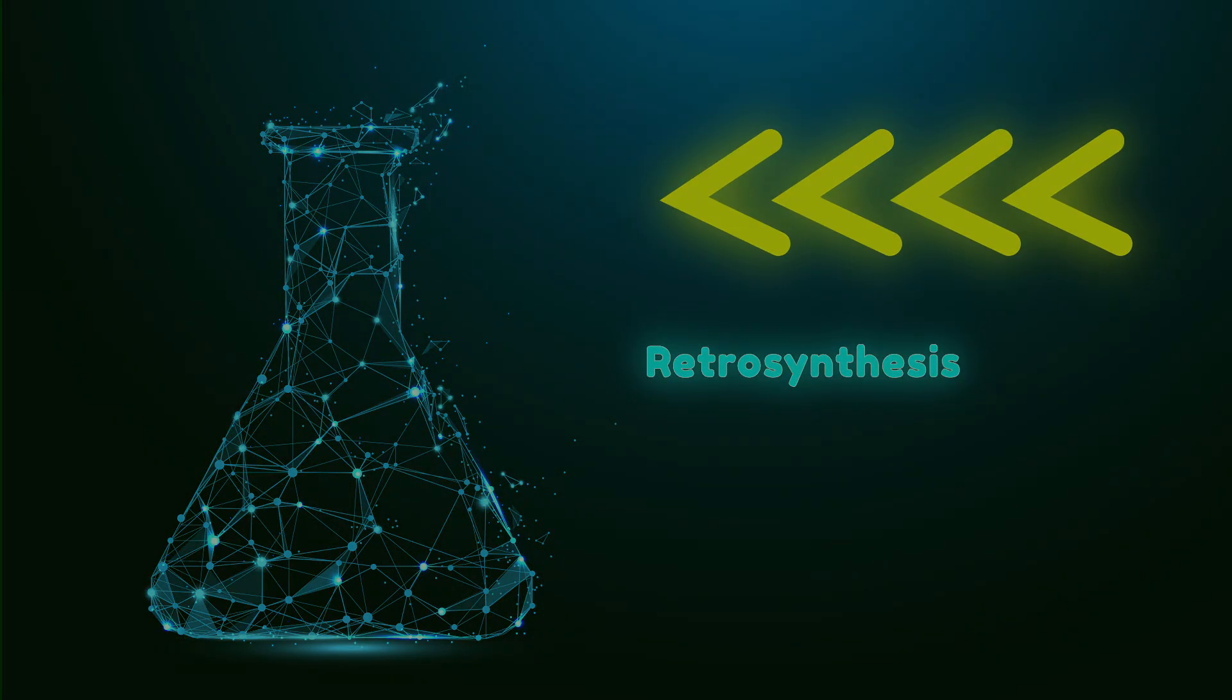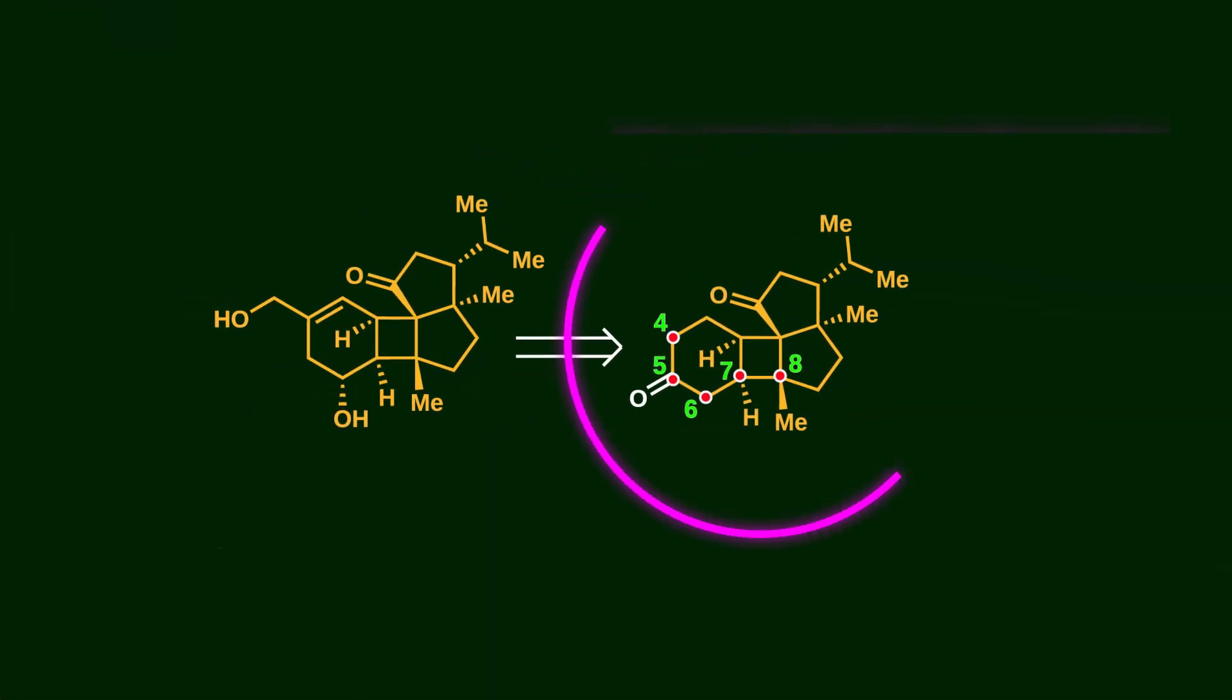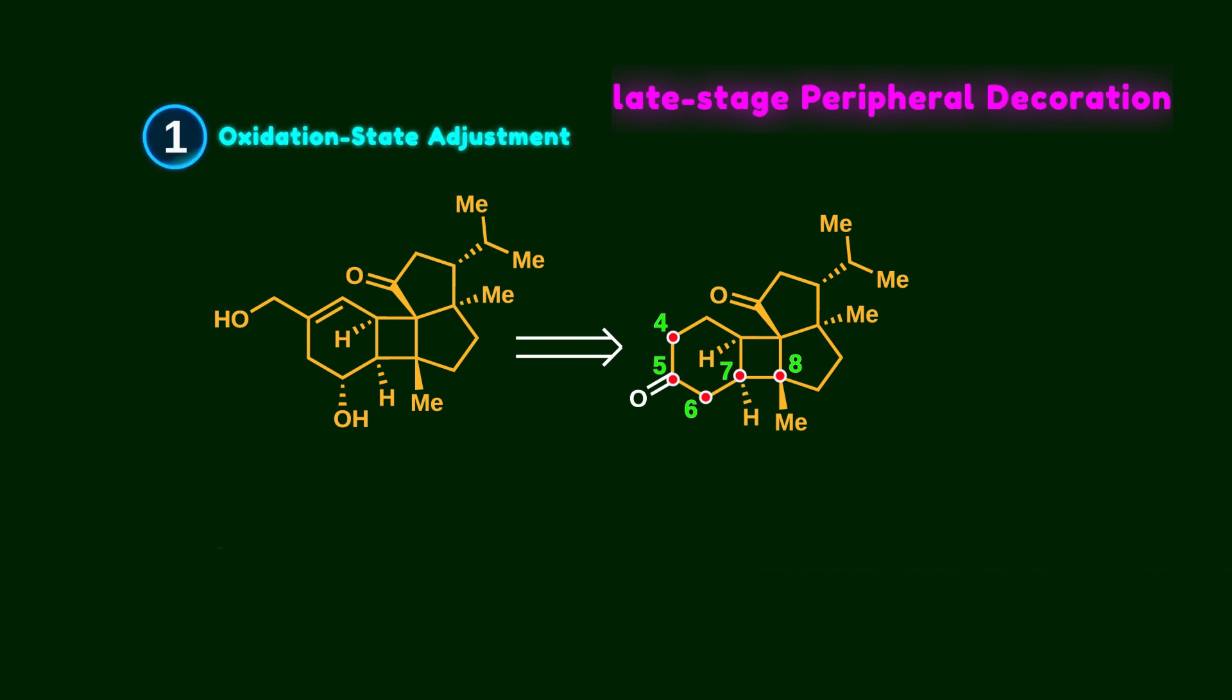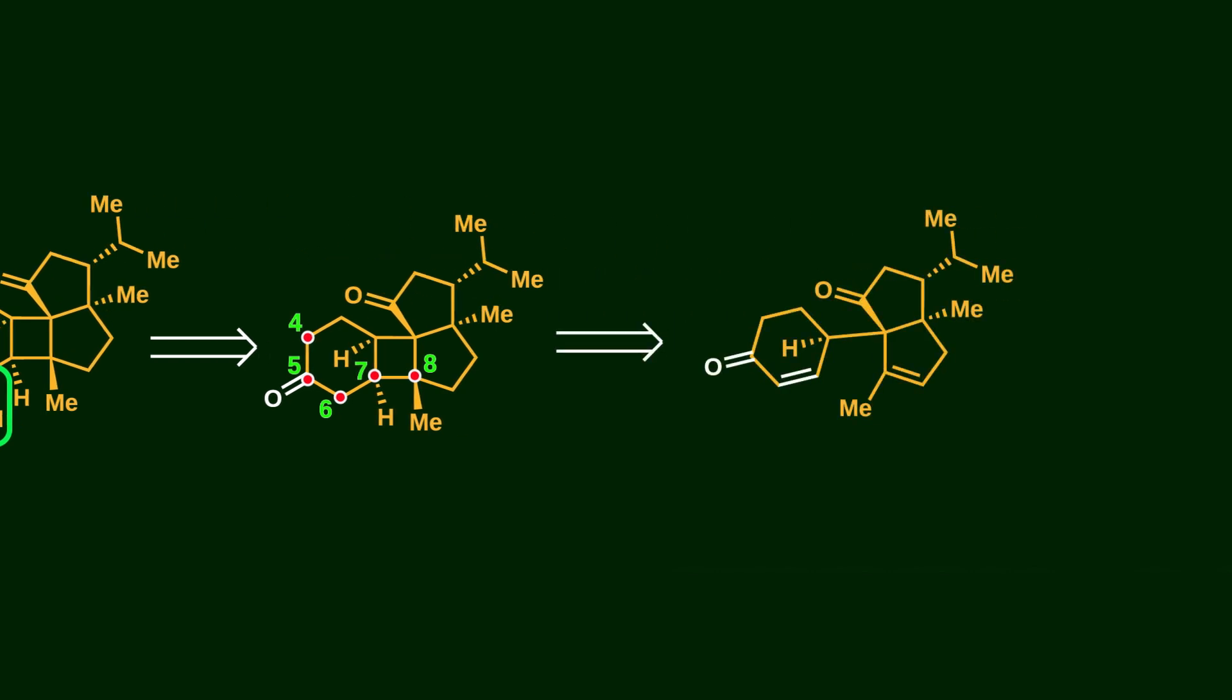So let's start with the retrosynthetic analysis. The group designed this compound with the C5 ketone as an intermediate towards sufframine. There is actually a late-stage periphery decoration that involves two structural changes: first, an oxidation state adjustment, which is the installation of the hydroxy group at the C6 position; second, the introduction of a hydroxymethyl group at C4.